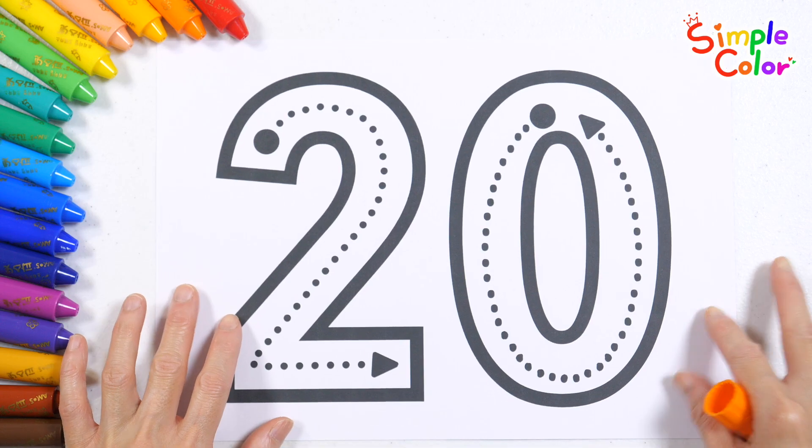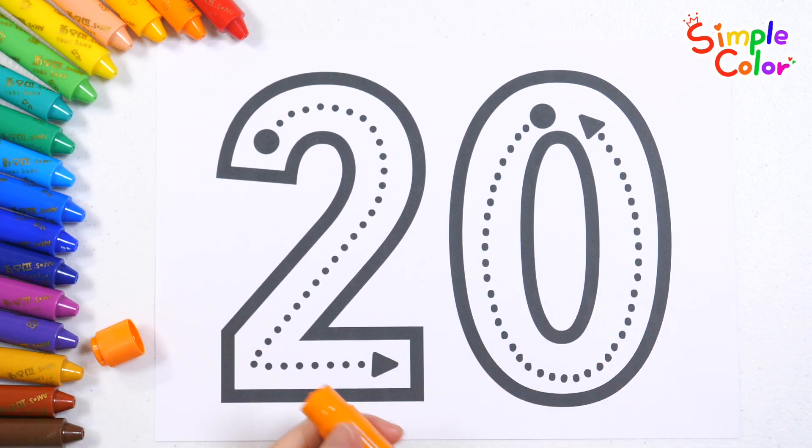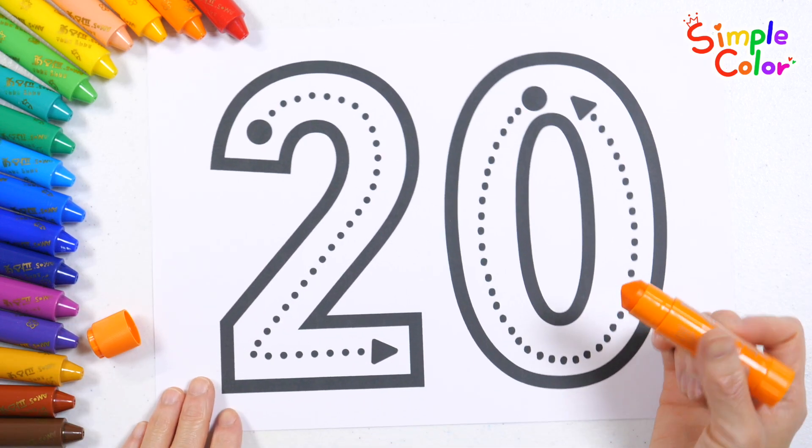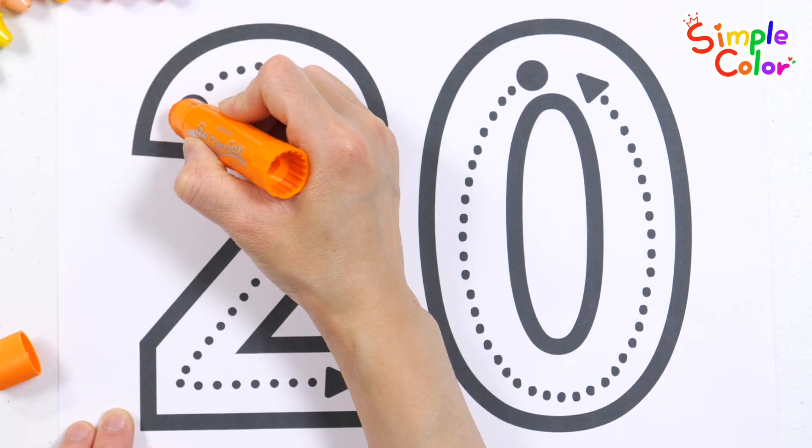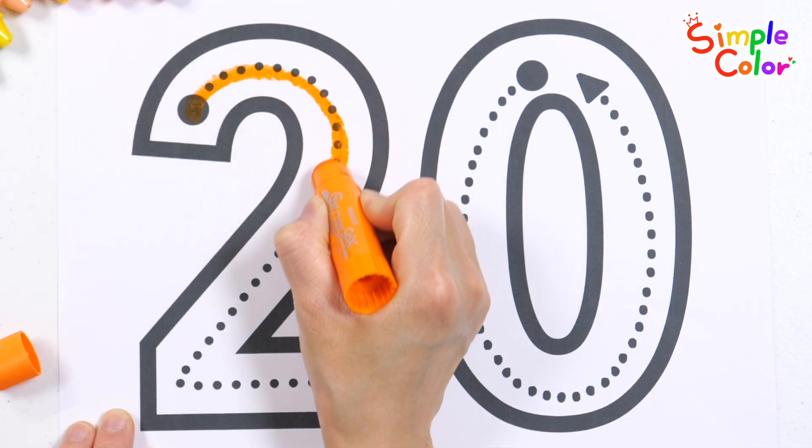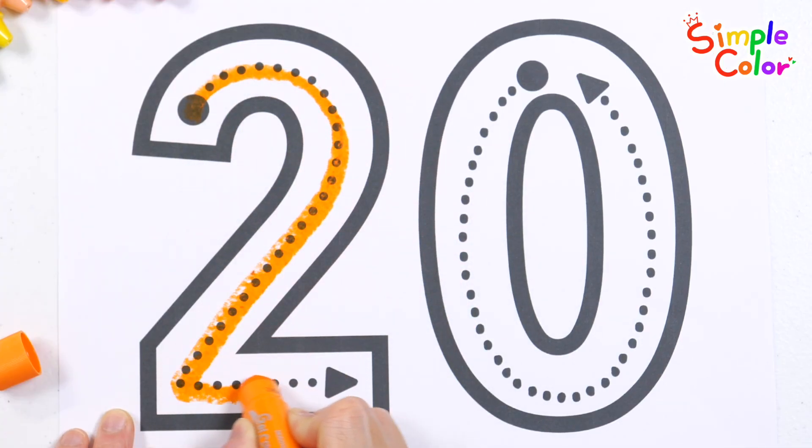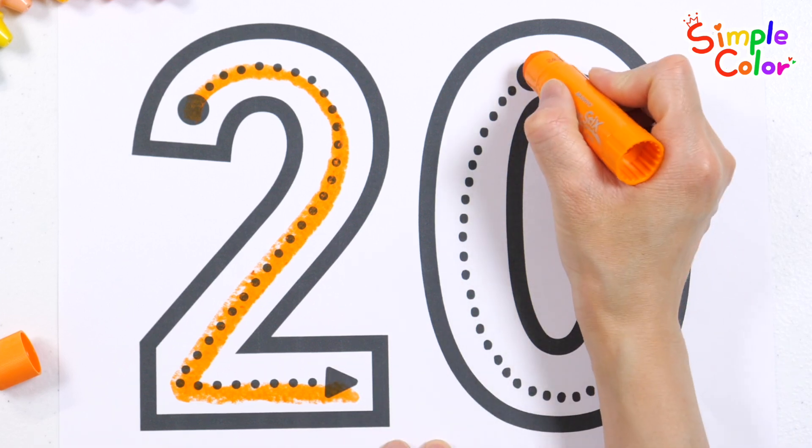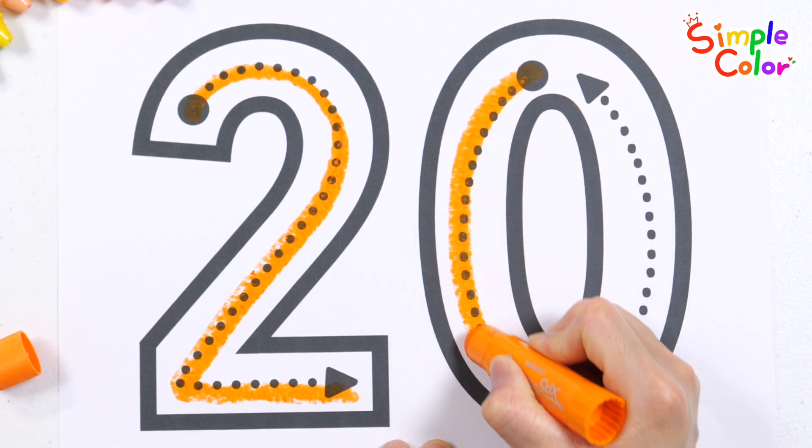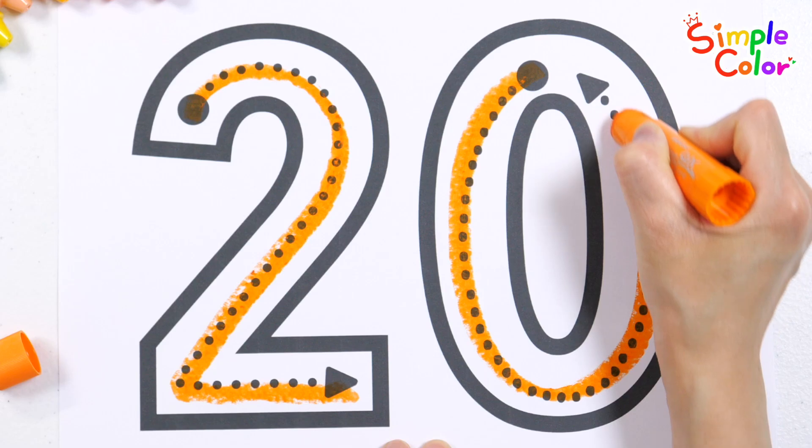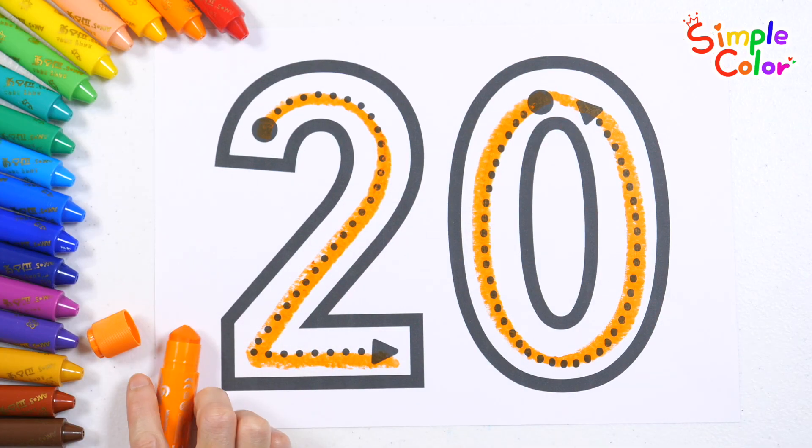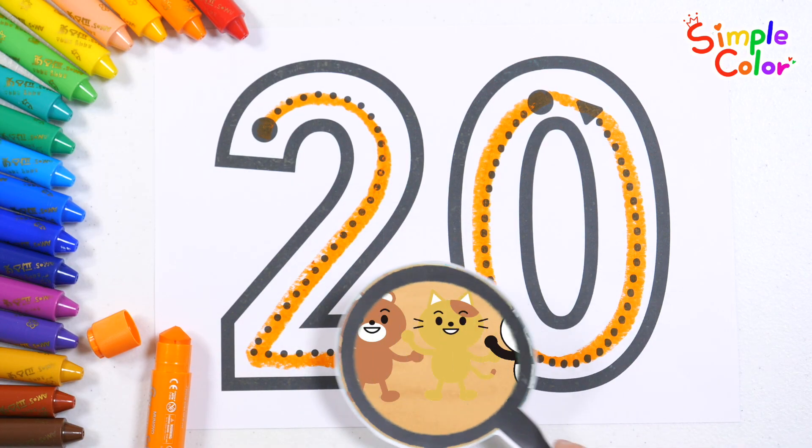Let's write the number 20 by tracing along the dotted lines in the direction of the arrows. I is for island in the sea. J is for jungle, wild and free. K is for key to open the way. L is for lion, guides the royal way. 20. What do you see?